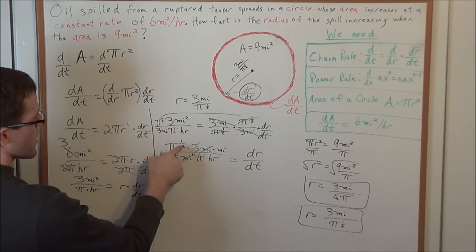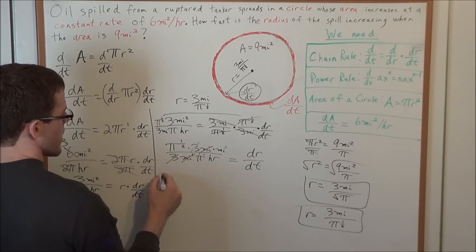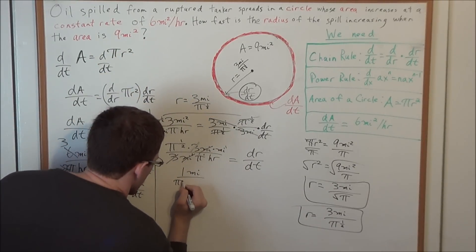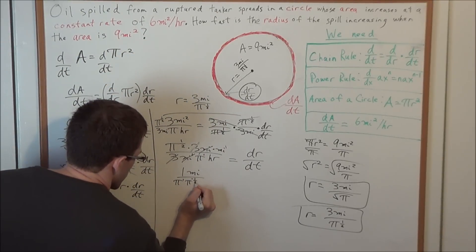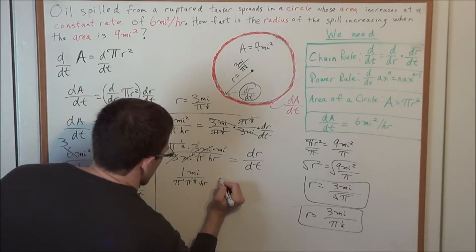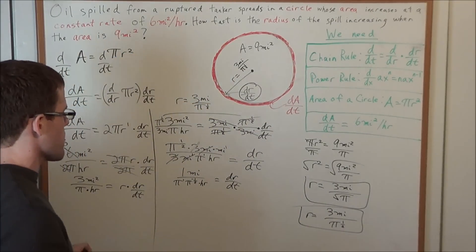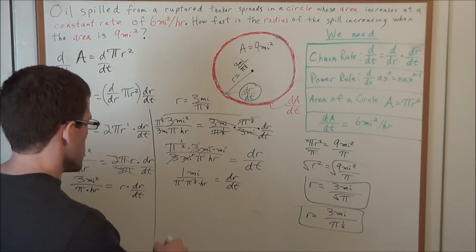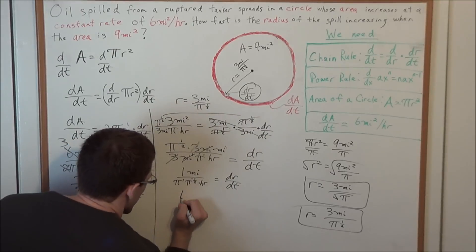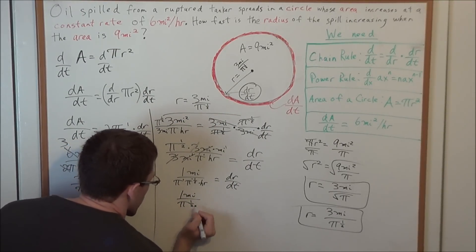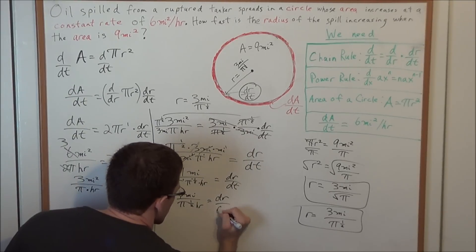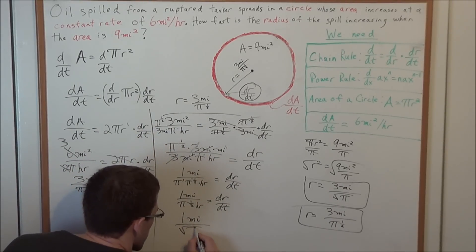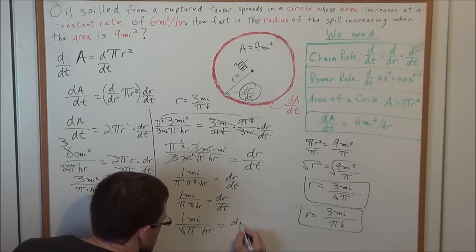Now we simplify the π terms. Bringing π^(1/2) into the denominator as π^(-1/2), we multiply π^1 · π^(-1/2). By the law of exponents, we add the exponents: 1 + (-1/2) = 1/2. So we're left with 1 mile per π^(1/2) hours, which equals dr/dt. Written more cleanly: dr/dt = 1 mile / √π hours. That is our final answer.